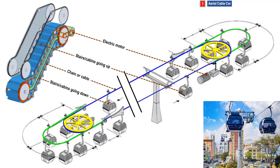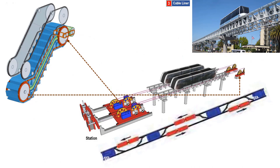The ART cable is equivalent to the chain of the escalator. Both have wheels to guide the cable or chains in a circulatory motion. Like the aerial cable car, the cable liner has similar characteristics and mechanisms to an escalator.